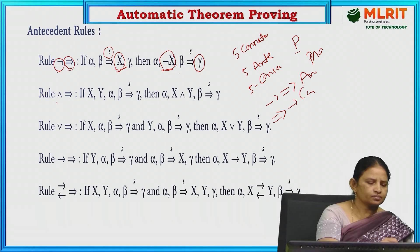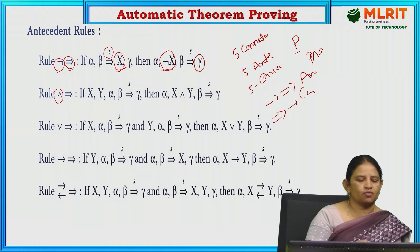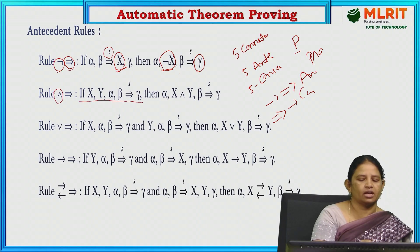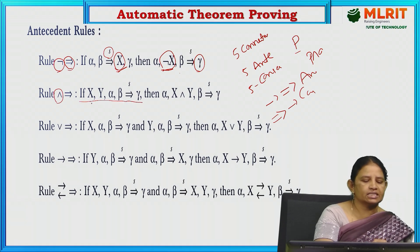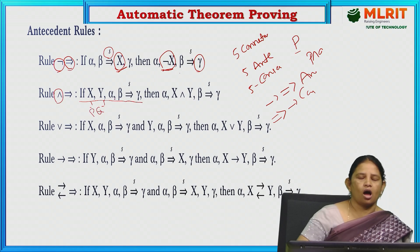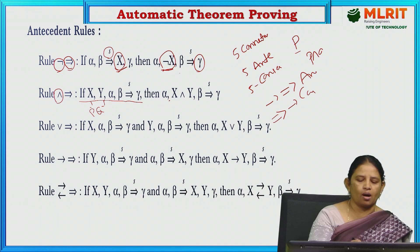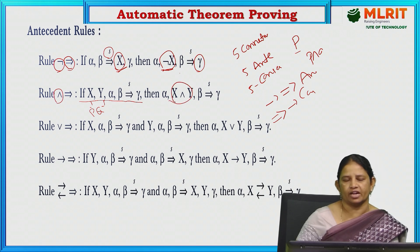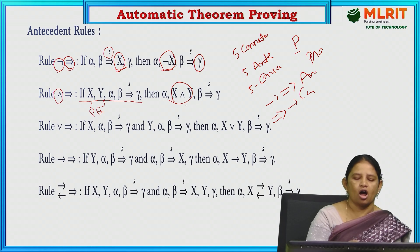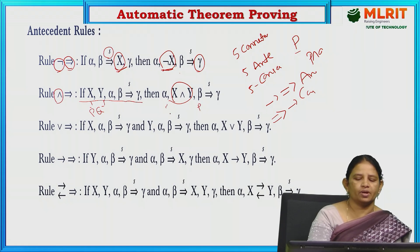Second antecedent rule is conjunction. In the case of conjunction, if x comma y comma alpha, beta, gamma — where x and y are two string of formulas and alpha, beta, gamma may be empty — you have to apply the connective AND for those x and y. Then alpha, beta may be consisting of empty or a string of formula.